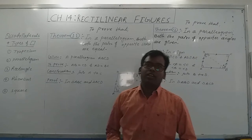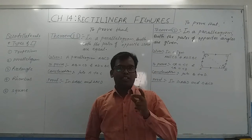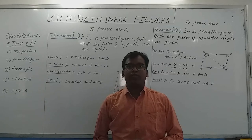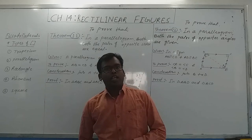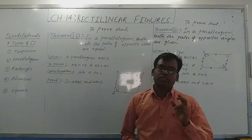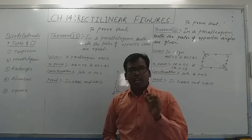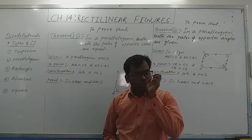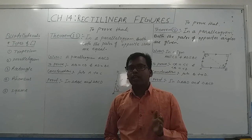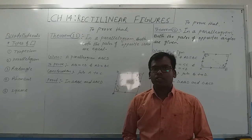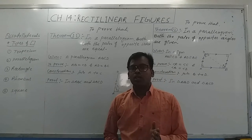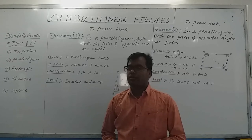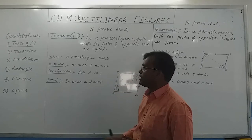Hello everyone. Today is the second class of the chapter rectilinear figures. Today I am going to start with some related types of quadrilaterals. These types of quadrilaterals we have already learnt up to class 7, so please try to recall what is given in your textbook. Let me explain what the types of quadrilaterals are.